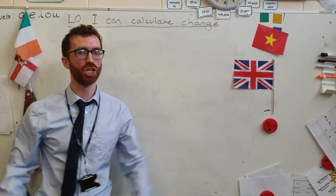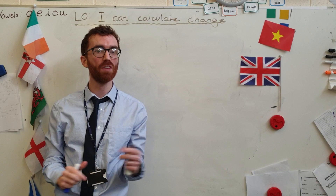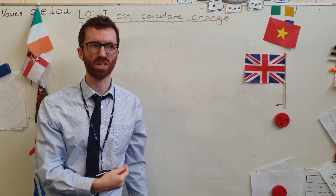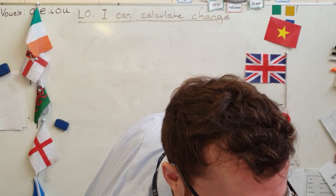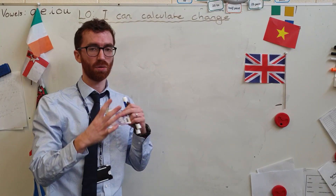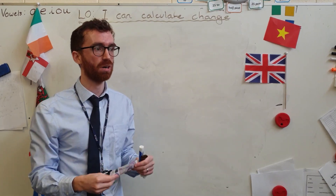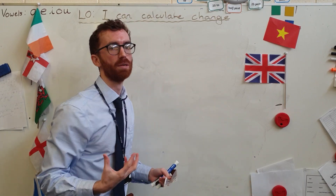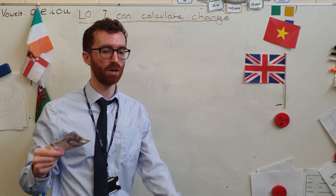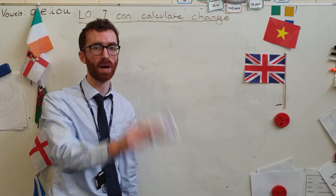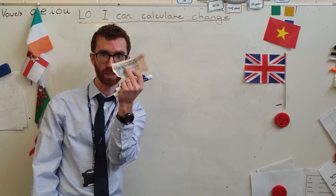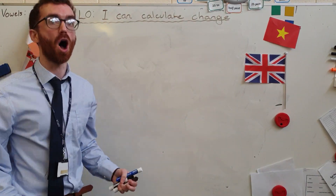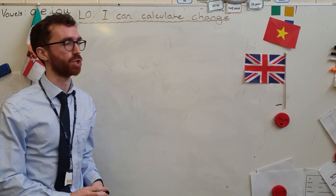Our learning objective is: I can calculate change. First thing we need to be sure of is, what is change? Change is the money you get back when you pay a little bit too much. If I bought something for £10 and all I had was a £20 note, the shopkeeper would need to give me back a certain amount. So if it costs £10 and I've only got £20, I'm going to get £10 back in change. It is the money I am owed in a transaction if I pay a bit too much.